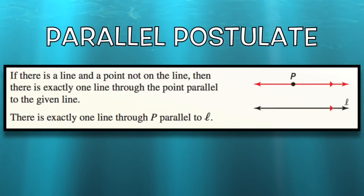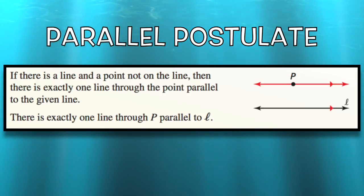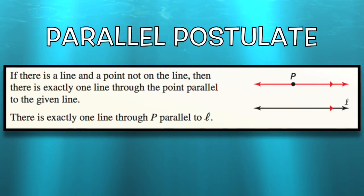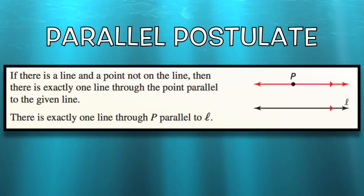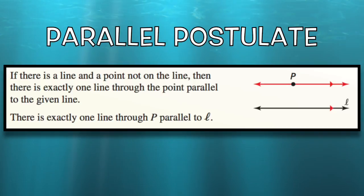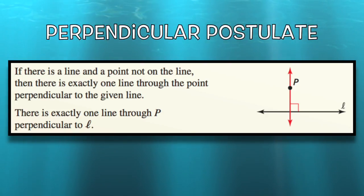Next we have the Parallel Postulate, which simply says that if there's a line and a point not on the line, then there's exactly one line that goes through that point parallel to that line. In the picture, point P is not on line L, so there's only one line I can draw through point P that's parallel to line L.